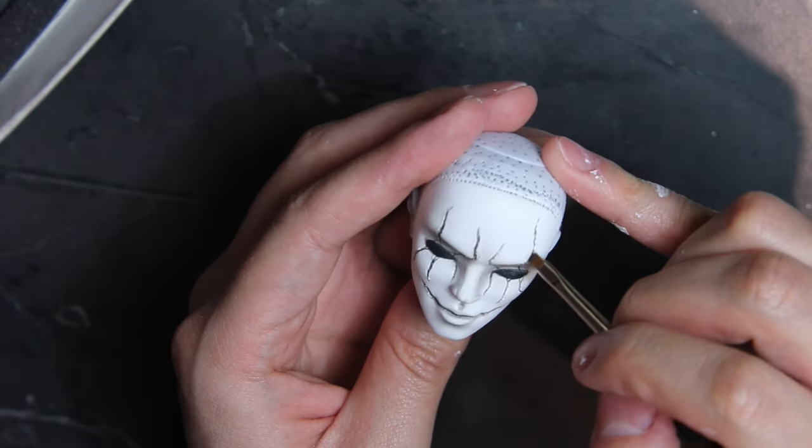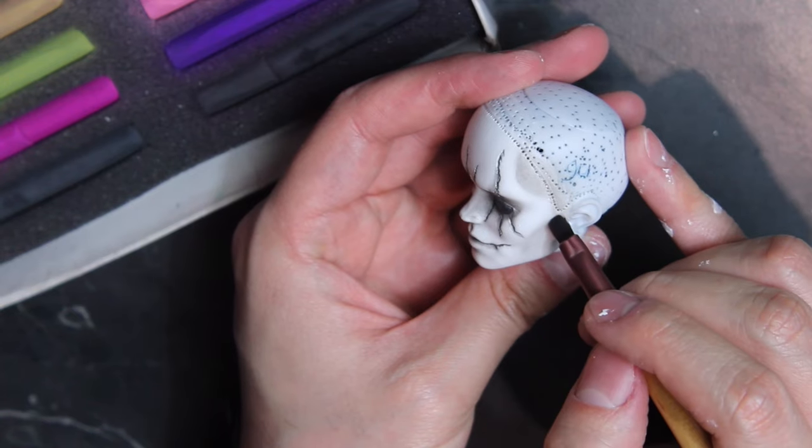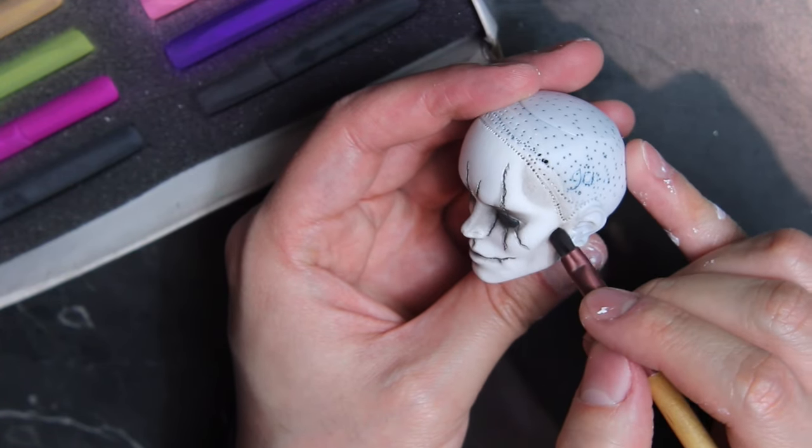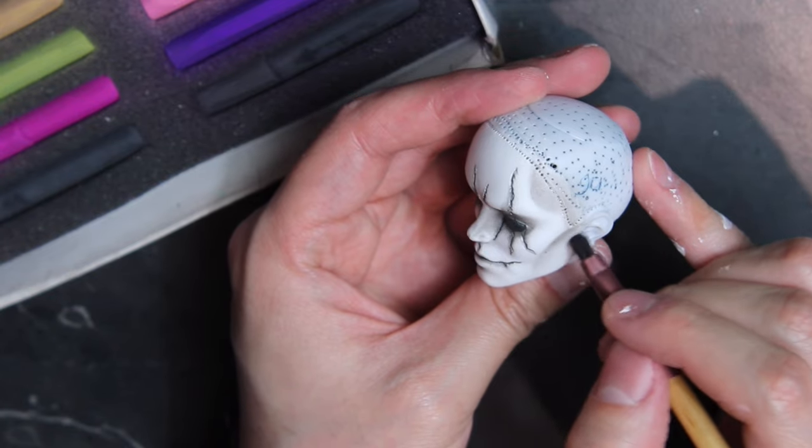Later, add shadow to the cracks with pastel and contour the temples and the cheeks. Playing around with light and shadows is very important to compensate the lack of dimensions on the plastic.